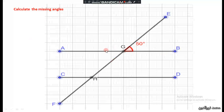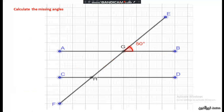Now calculate all the missing angles in this figure. This angle and this angle occupy corresponding positions, so they are corresponding angles. Since the lines are parallel, corresponding angles are equal, so this angle is 50 degrees.